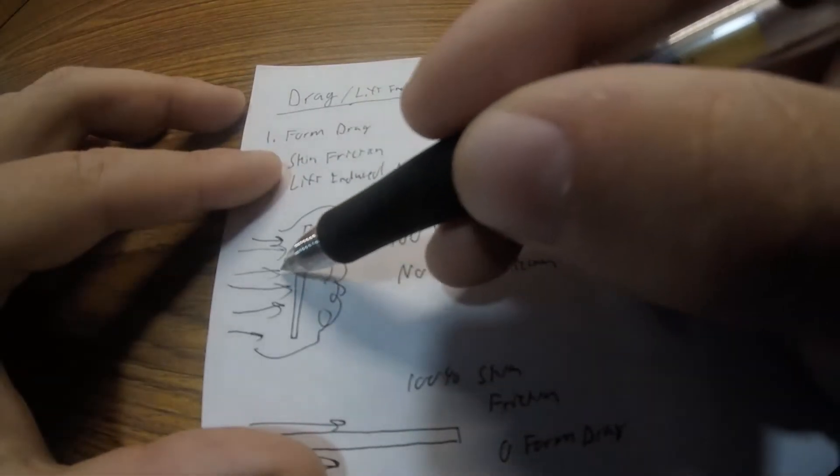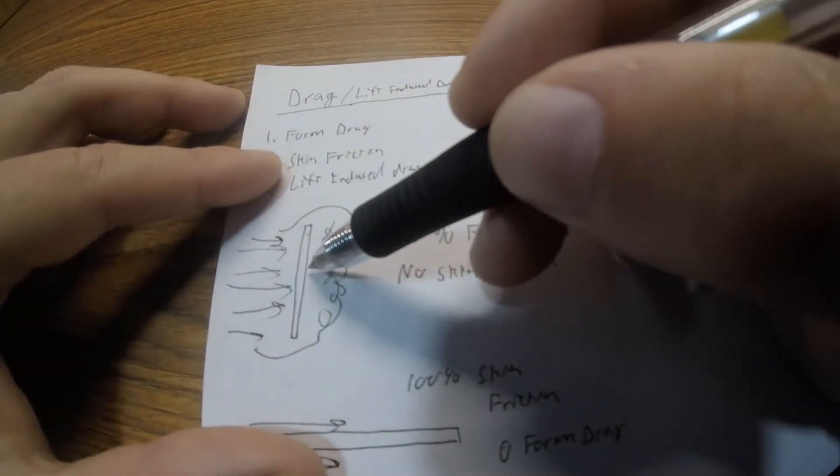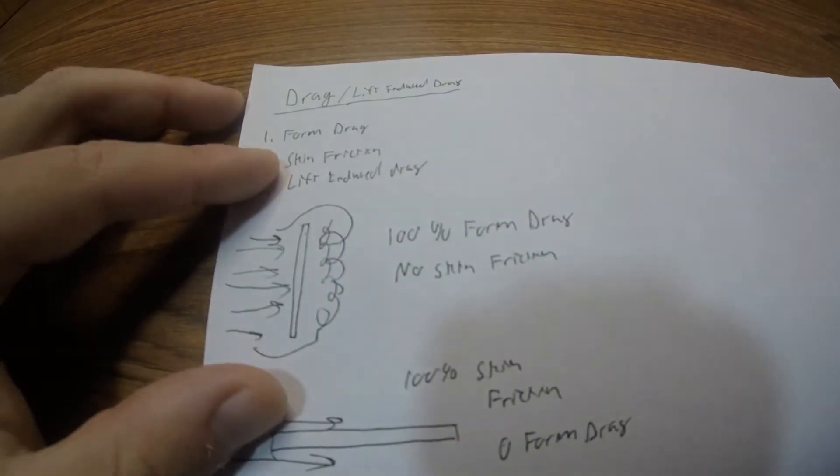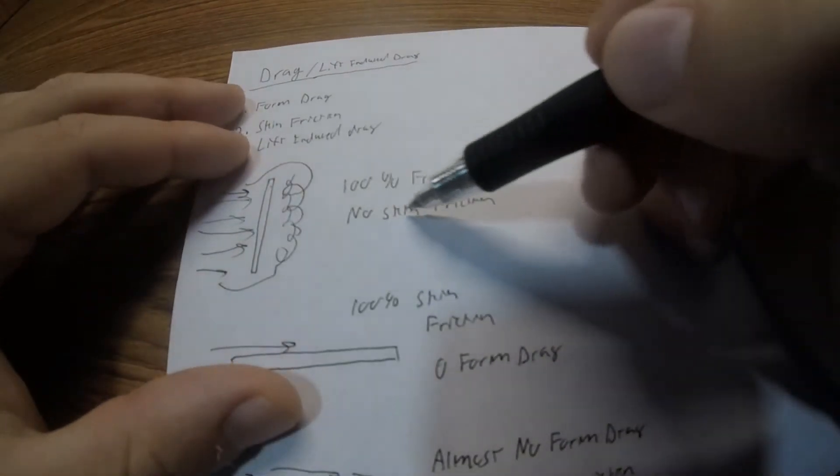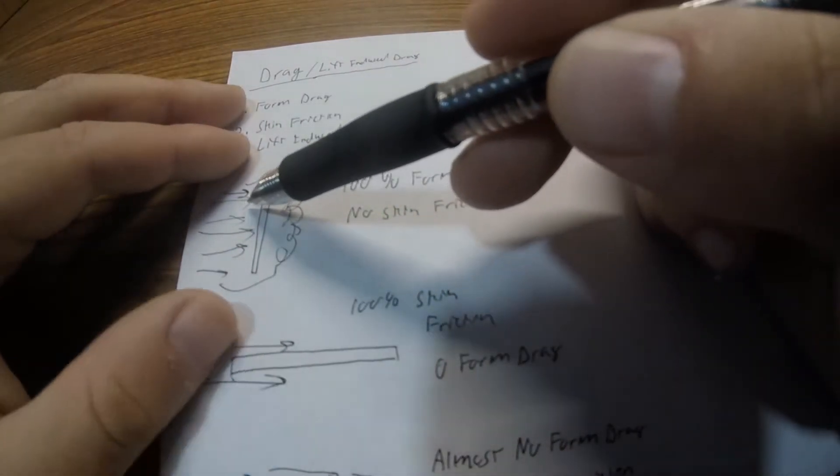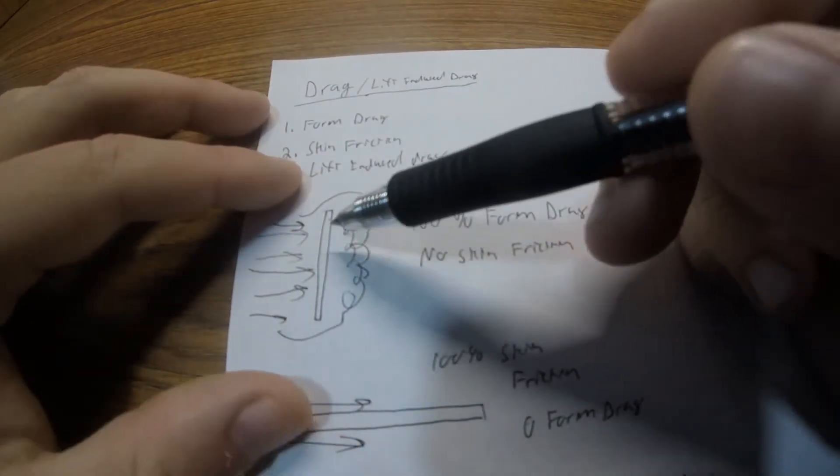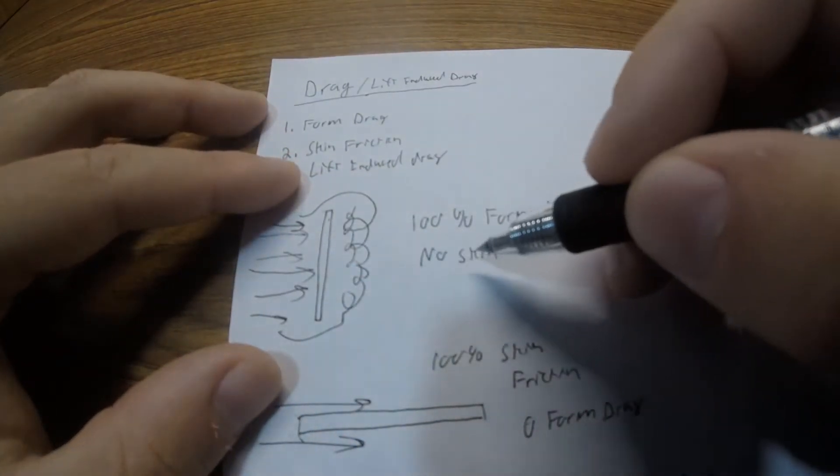Very high pressure in the front here, very low pressure in the back. Basically going to be all form drag with basically no skin friction. There's very little travel along the surface of the plate for the air, so basically there's not going to be any skin friction.